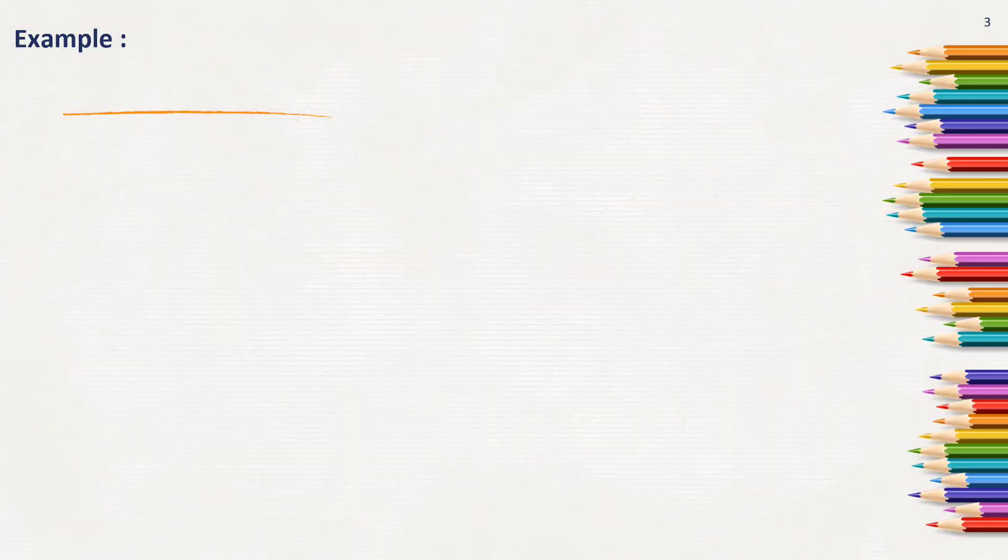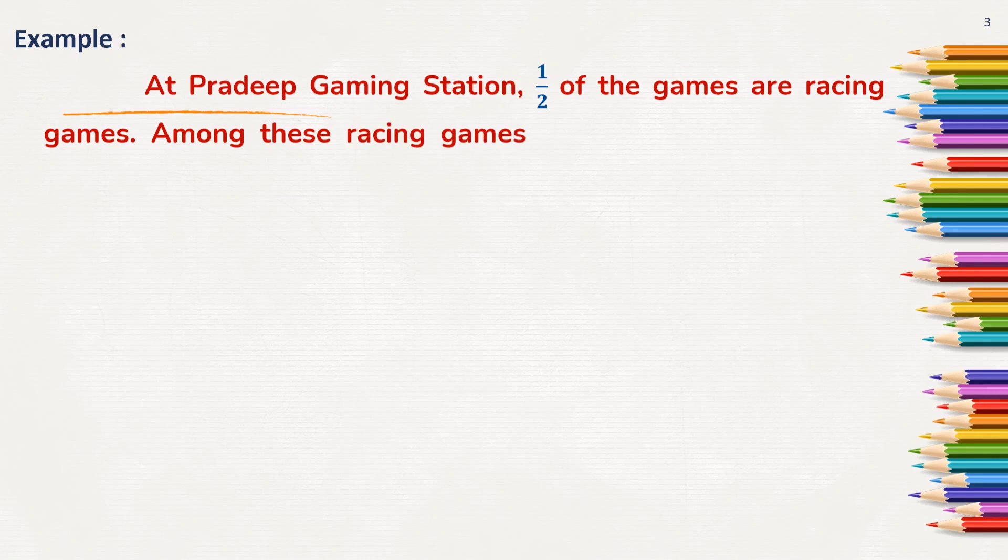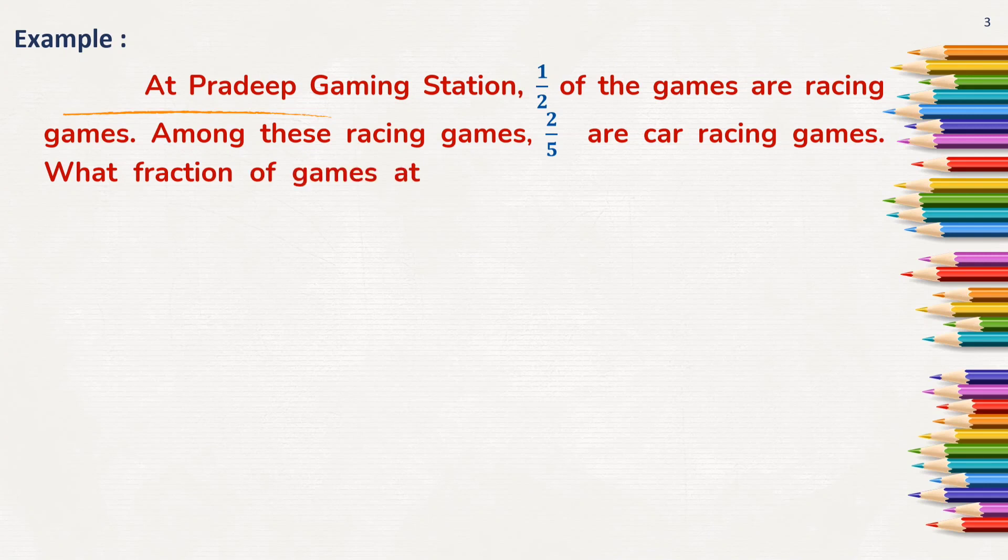Look at an example here. At Pradeep Gaming Center, 1 by 2 of games are racing games. Among these racing games, 2 by 5 are car racing games. What fraction of games at Pradeep Gaming Center are car racing games?